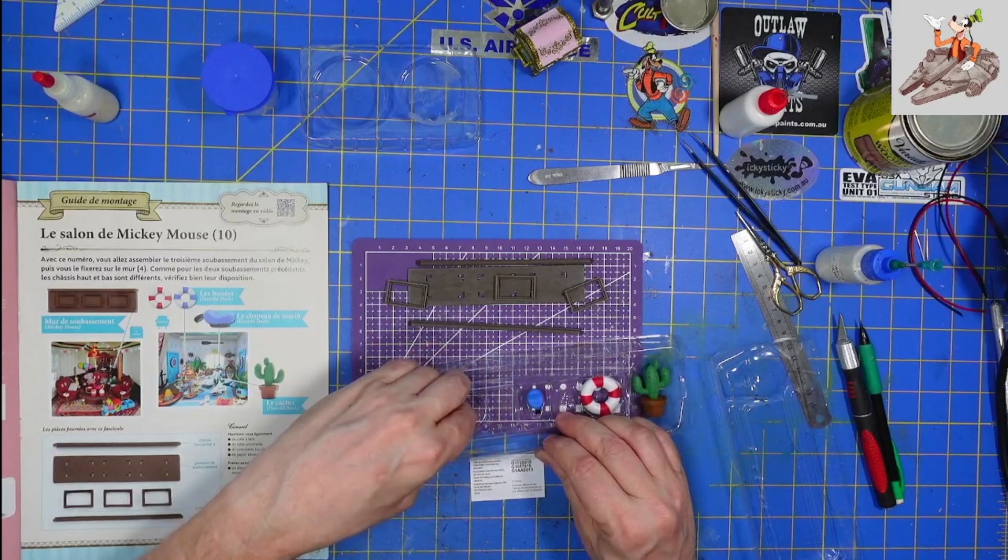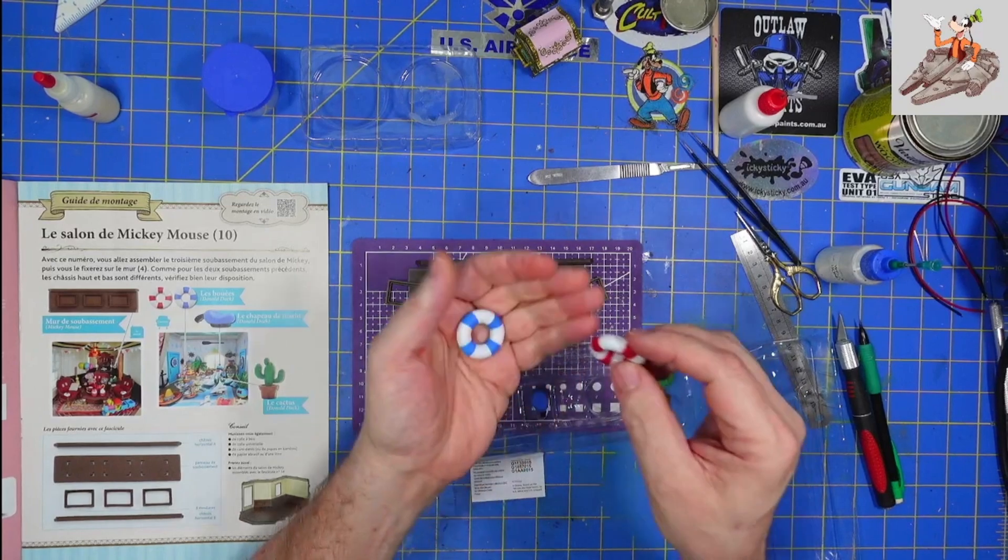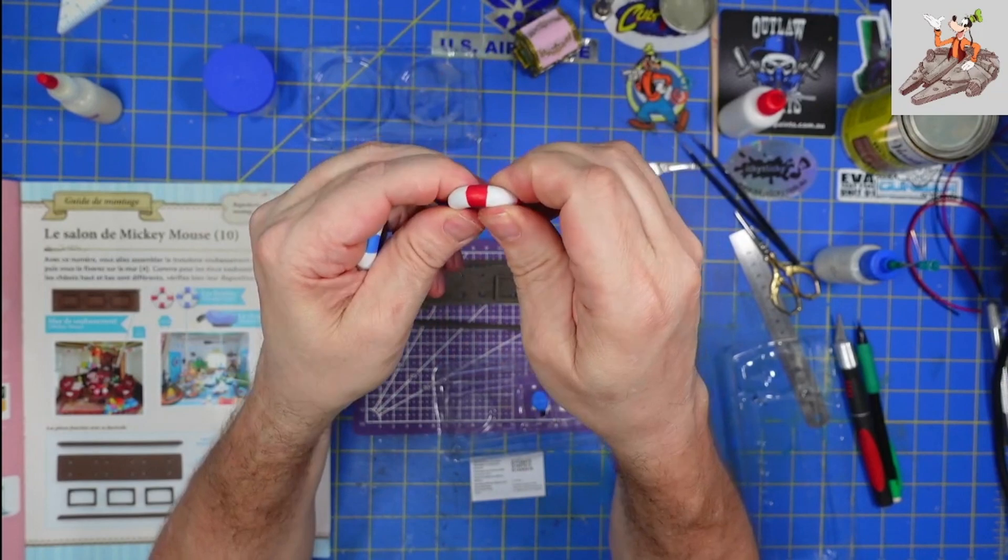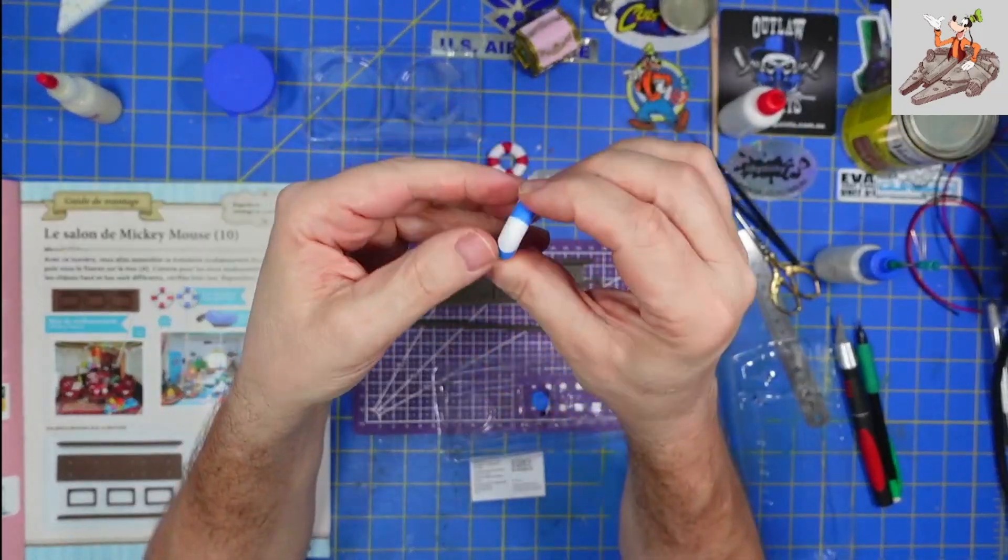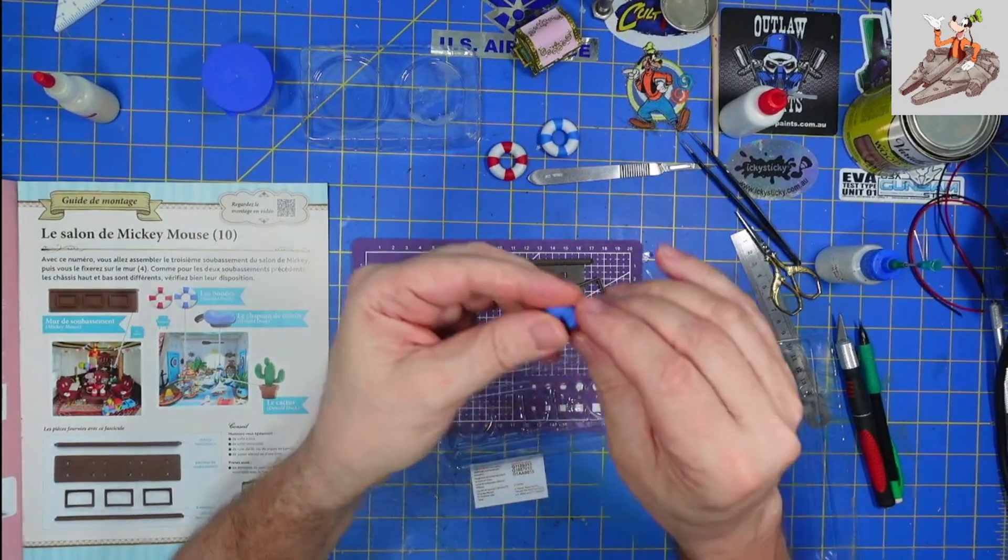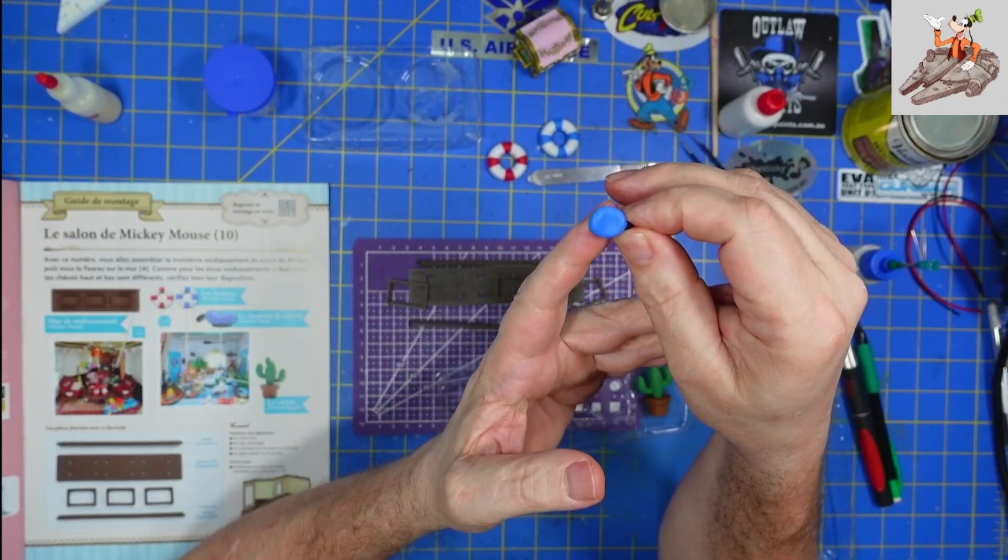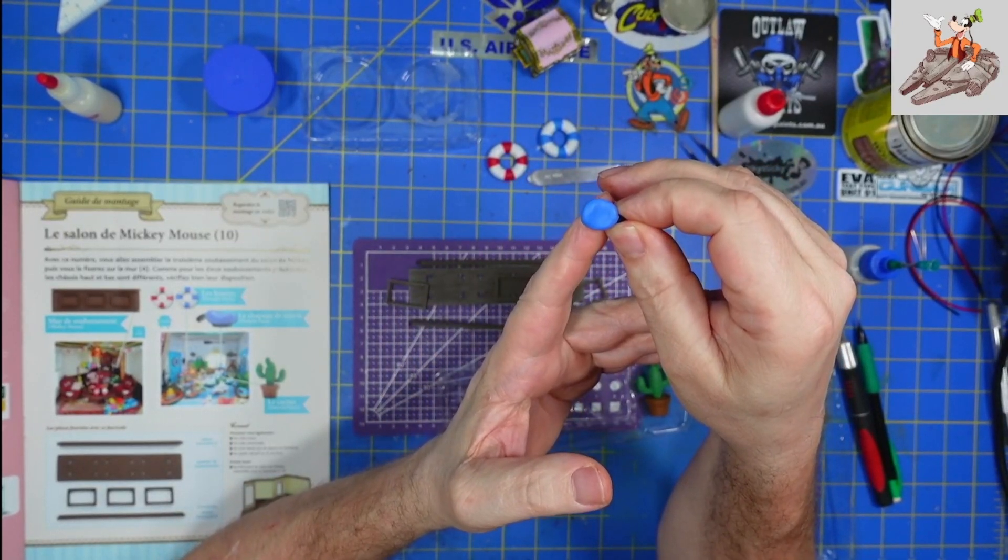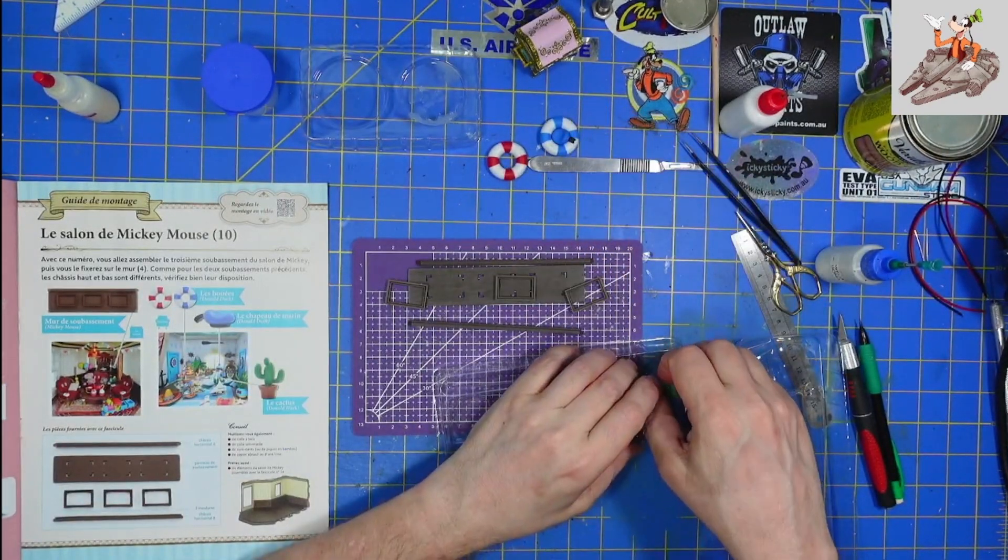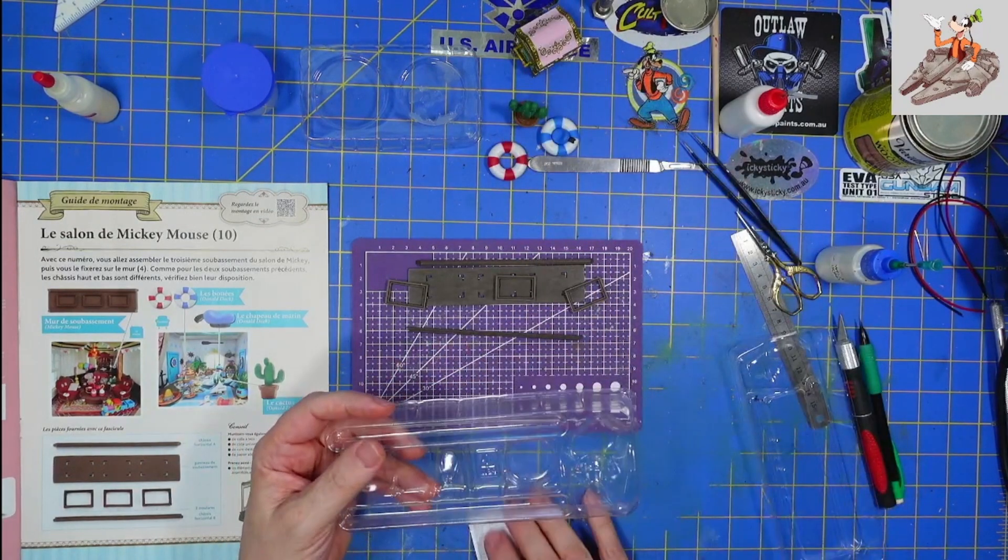And then we have decorative parts. We have two swim rings, lifesavers, whatever you want to call them. They're pretty solid. We have a Donald, we have Donald's hat or it says chapeau de marin, a sailor's hat for Donald Duck, and then we have a cactus. I'm guessing all those will go in the Donald Duck room.